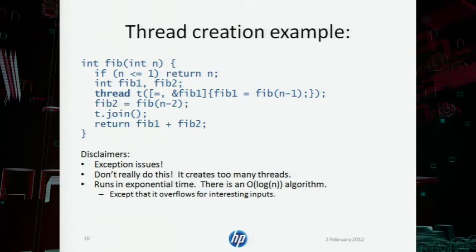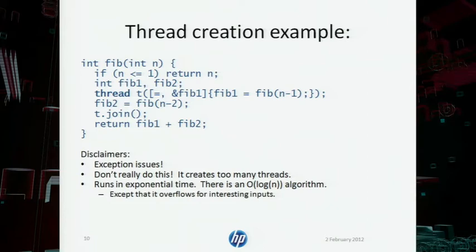We notice that those two computations are independent and can run in parallel. So we create another thread to compute Fibonacci of n-1 while we compute Fibonacci of n-2 in our own thread. I declare two local variables, Fib1 and Fib2, to hold the results. I create a thread whose argument is a lambda expression — a new C++11 construct — that computes Fibonacci of n-1 and assigns the result to Fib1 by reference. I then compute Fib of n-2, join the thread, and return the sum.